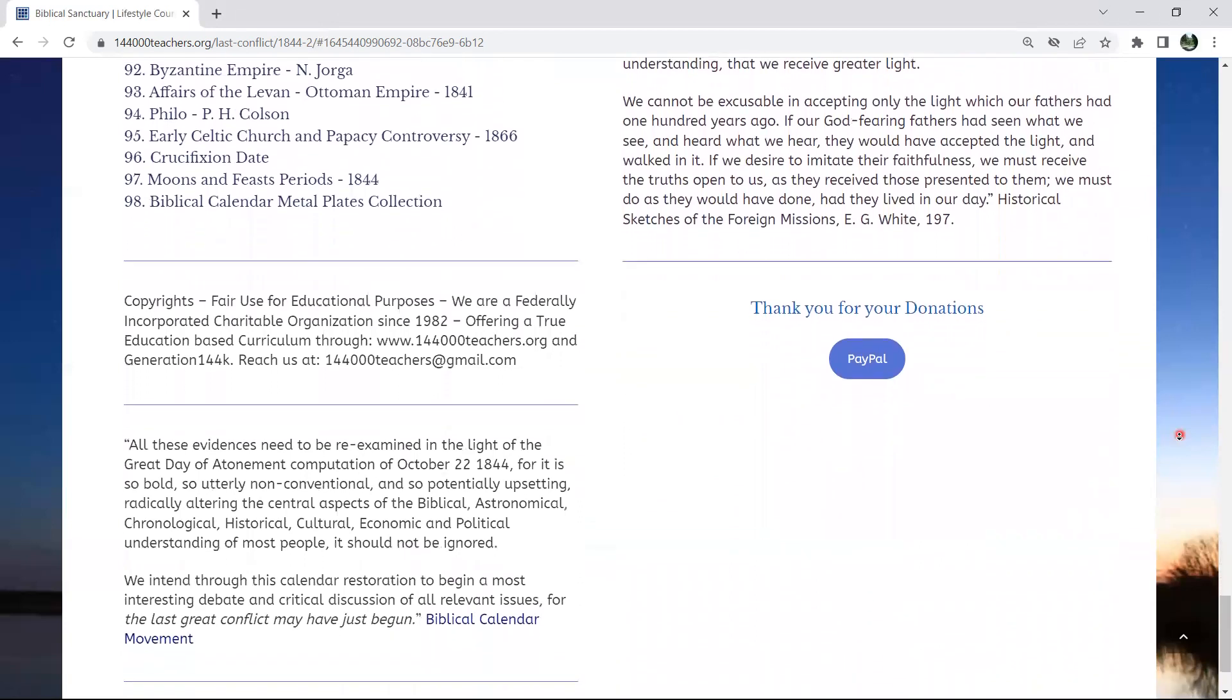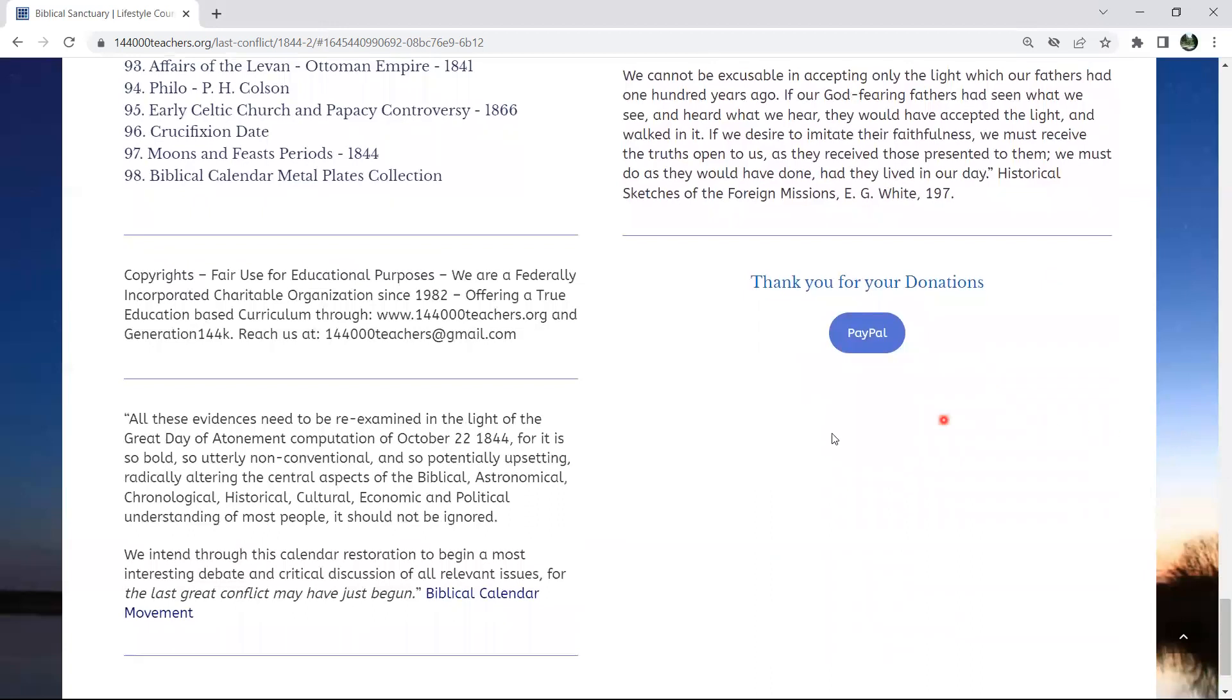All these evidences need to be re-examined in the light of the Great Day of Atonement competition of October 22nd, 1844. For it is so bold, so utterly non-conventional, and so potentially upsetting, radically altering the central aspects of the biblical, astronomical, chronological, historical, cultural, economic, and political understandings of most people, it should not be ignored. We intend through this calendar restoration to begin a most interesting debate and critical discussion of all relevant issues for the last great conflict may have just begun.